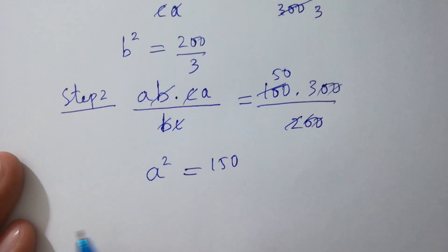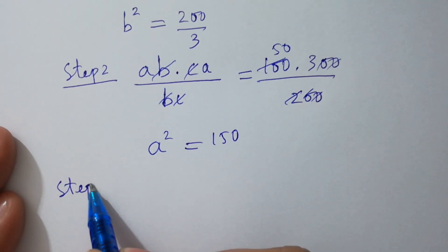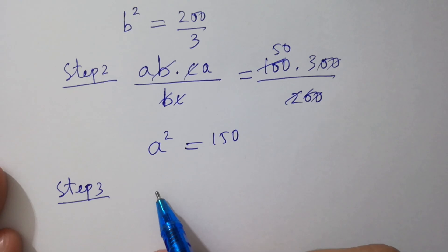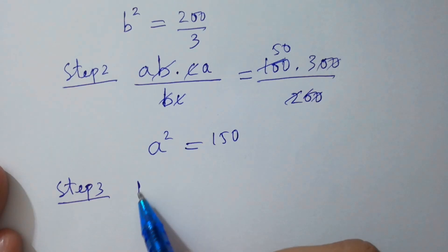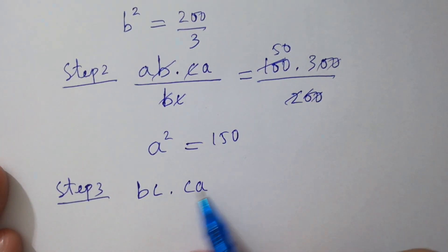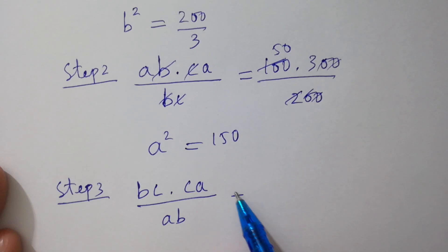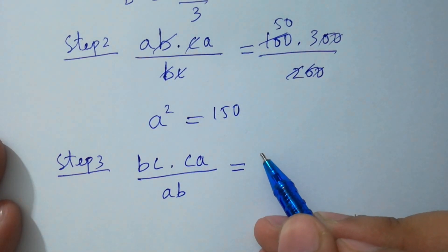Next, Step 3: multiply the second equation by the third equation, then divide by the first equation: (bc × ca) / ab = (200 × 300) / 100.